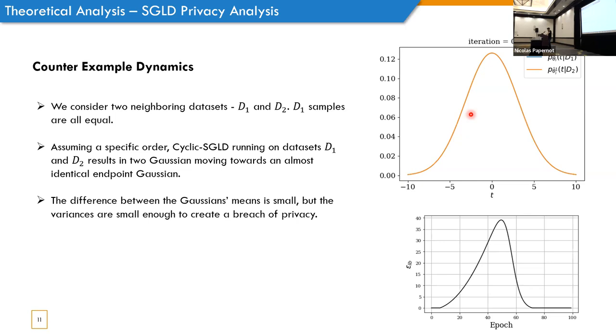So, to understand what happens here, let's look on the dynamics of the problem. And we consider two datasets, D1 and D2, where D1 samples are all equal. And by the way, they are not 0. Many times, in many other papers that I just put them to be 0, this is not the case here. And D2 have one sample different because it's a neighboring dataset.